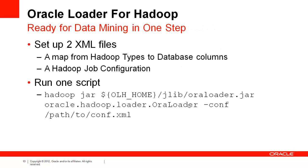Oracle Loader for Hadoop requires a bit of configuration, specifically a pair of XML files, but it will load our HDFS data into the database in a single MapReduce job. The two XML files necessary are a loader map, which maps the columns in our transaction table to Oracle table columns, and a job configuration file, which provides the necessary information for MapReduce to connect to an Oracle database, as well as our input file. At that point, we need only run the OraLoader class and our data is loaded.